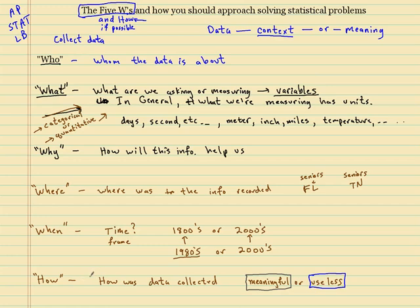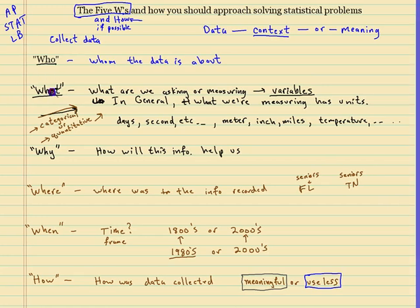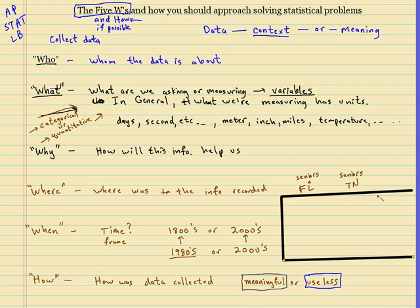So that's it on the five W's. Every time you do a problem. You should have. You should have a good idea. Of the who. And the what. The who and the what. And you should have a pretty good idea of the other ones. Especially as the year goes by.